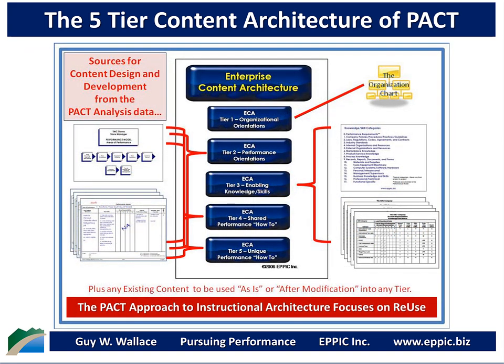Where does the content come from for this five-tier inventory scheme? Tier 1 content would come from a reflection of the organization chart, and as that organization chart changes over time, the content configuration within tier 1 would also change. Tiers 2, 4, and 5, which are about performance, would come from the PACT processes performance analysis outputs. Tier 3, enabling knowledge and skills, would come from the enabling knowledge and skills analysis efforts, plus any existing content to be used as-is or after modification into any tier.